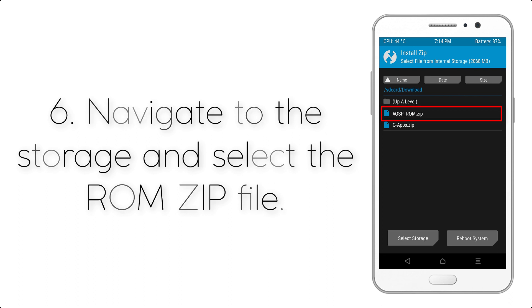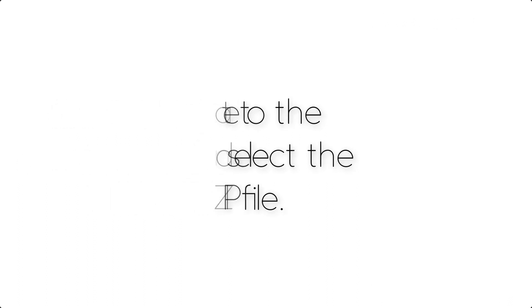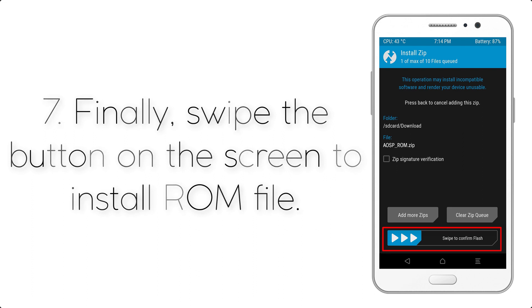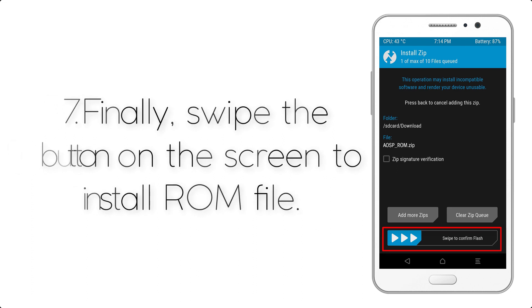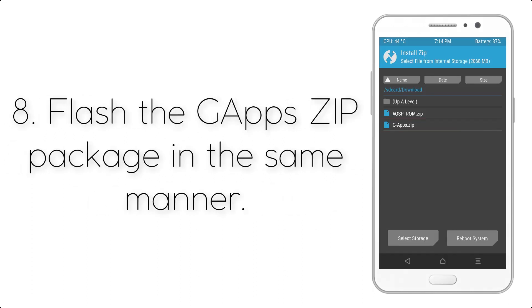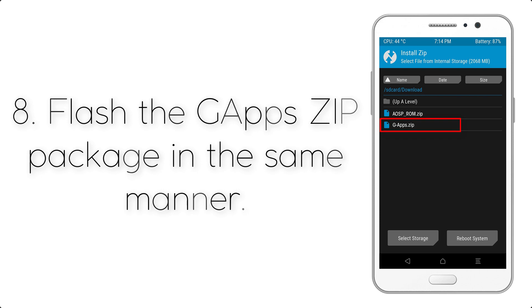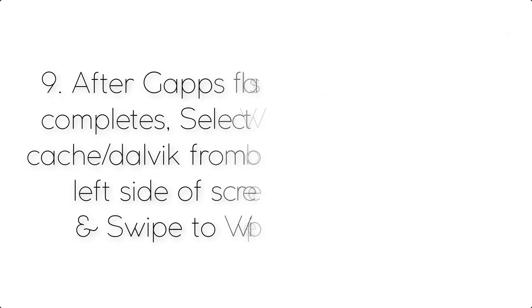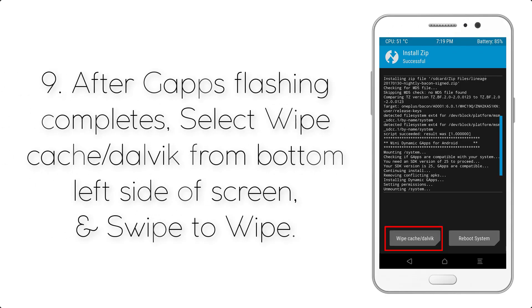Step 5: Go back to the recovery main screen and tap on the Install button. Step 6: Navigate to the storage and select the ROM zip file. Step 7: Finally, swipe the button on the screen to install the ROM file.